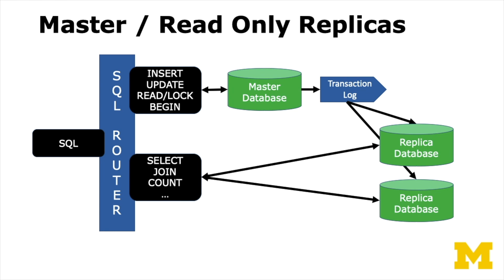One classic way of tuning a relational database is to add read-only replicas. You have software — maybe even the database itself — that looks at each SQL statement and determines which are making changes and which are not. Inserts, updates, or transactions that change the database go to one master database, which we make as fast as possible. As changes are made, the master spews out a transaction log. Transaction logs are how databases ensure changes are made — they write to the log, then to the database, and if something blows up, they reapply from the log.